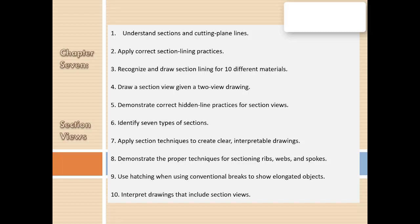The objectives are to understand section views and cutting plane lines, apply correct section line technique, recognize and draw section lines for 10 different materials, demonstrate correct hidden line practice for section views, identify seven types of sections, apply section technique to clear and interpretable drawings, and demonstrate proper technique for sectioning ribs, webs, and spokes.